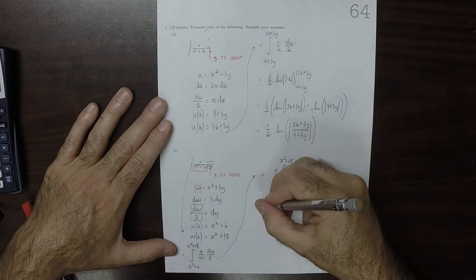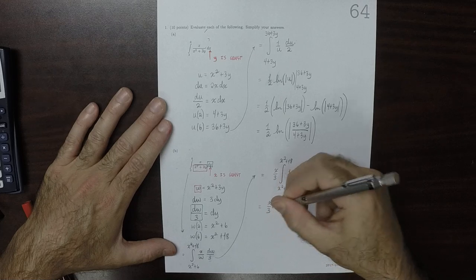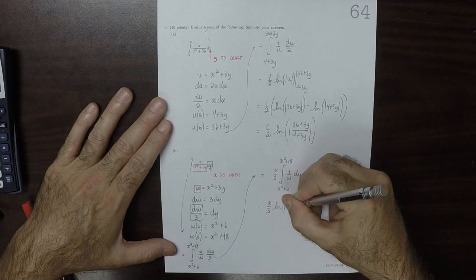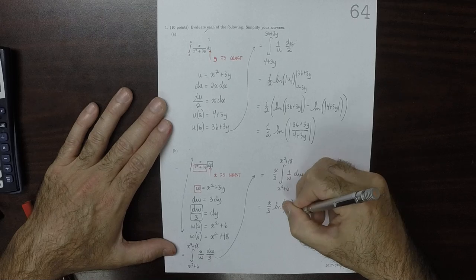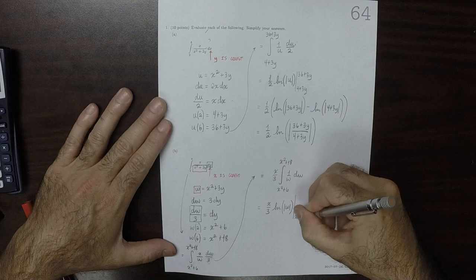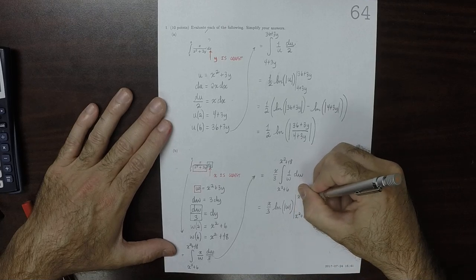Okay, so now we're getting somewhere. So then x over 3, natural log, absolute value of w, x squared plus 6 to x squared plus 18.